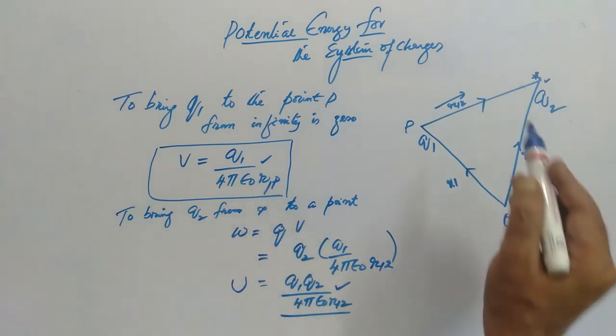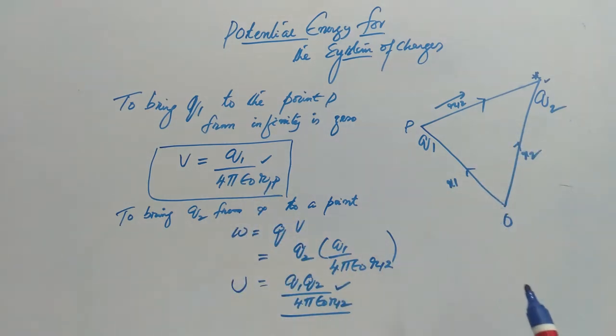Now in that presence of Q2, you are bringing Q1 charge from infinity. So in that case you have to do some work. That work will be Q1 times V.